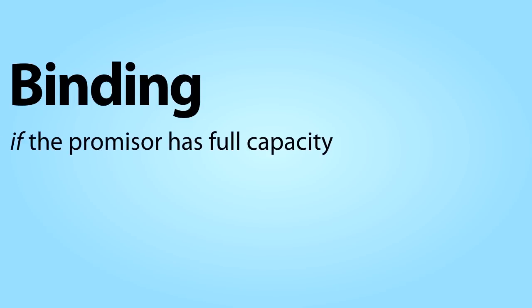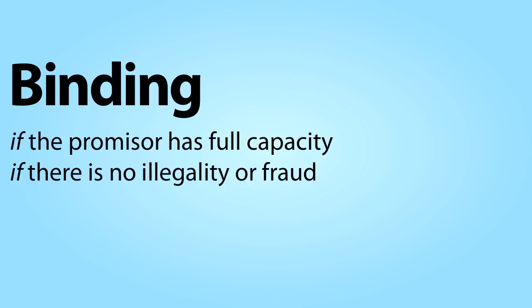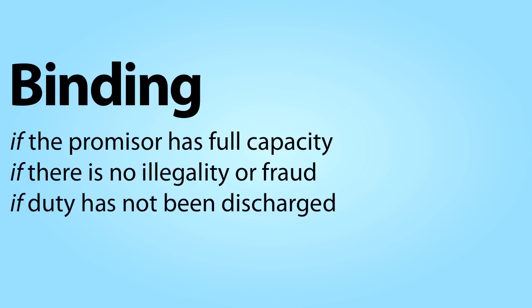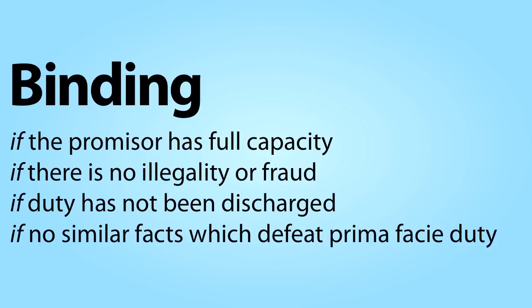The specific meaning of the word contract as used in the Restatement presents us with a conundrum. If a contract is a legally enforceable promise, we can't actually know what is or is not a contract until and unless the enforceability of the promise is litigated in a court of law. The comments to Section 1 try to finesse this by saying that when a promise is described as binding — a synonym for legally enforceable — it means there is a legal duty to perform the promise if the promisor has full capacity, if there is no illegality or fraud in the transaction, if the duty has not been discharged, and if there are no other similar facts which would defeat the prima facie duty which is stated.